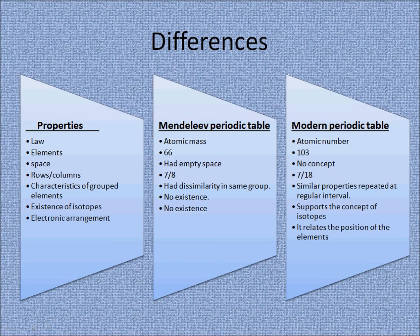Another difference concerns the characteristics of group elements. In Mendeleev's periodic table there was dissimilarity within the same group. For example, the atomic number of argon is 18 and that of potassium is 19. According to the modern periodic table, elements are arranged in order of increasing atomic number, so argon with the lower atomic number comes first and potassium with the higher atomic number comes later, even if their atomic masses appear in the wrong order — this correction was missing in Mendeleev's periodic table.